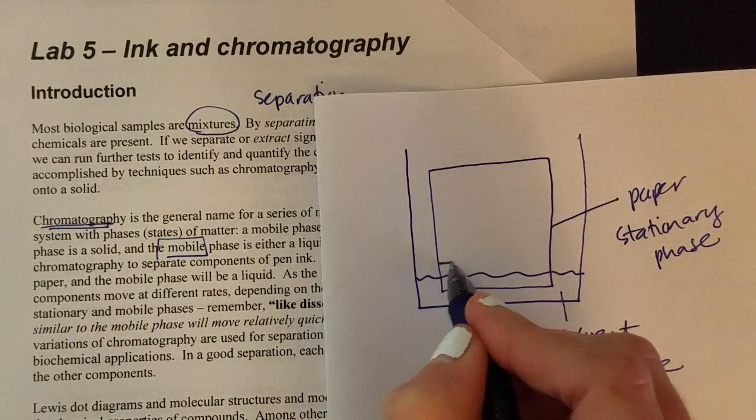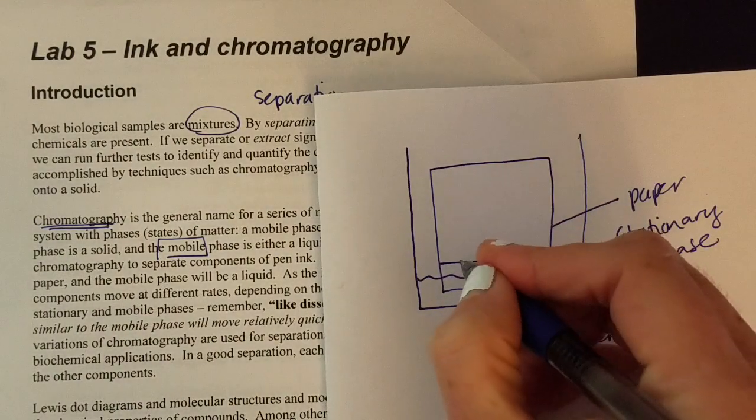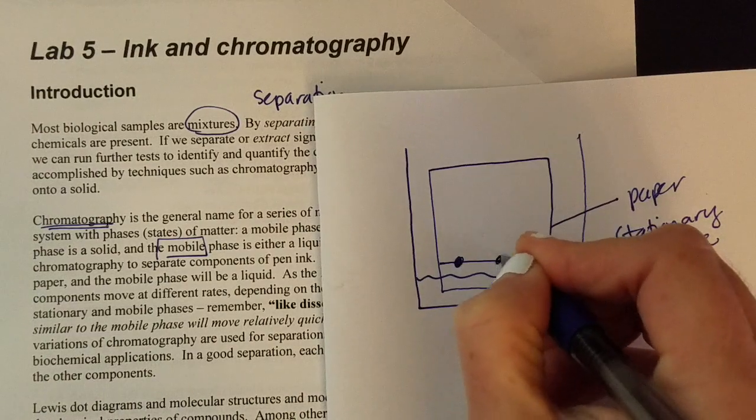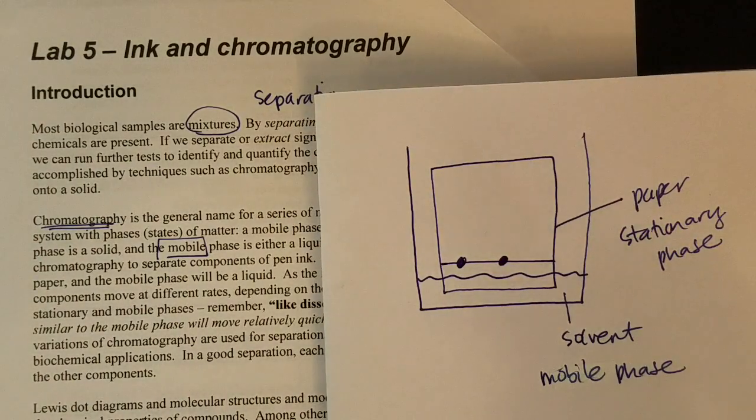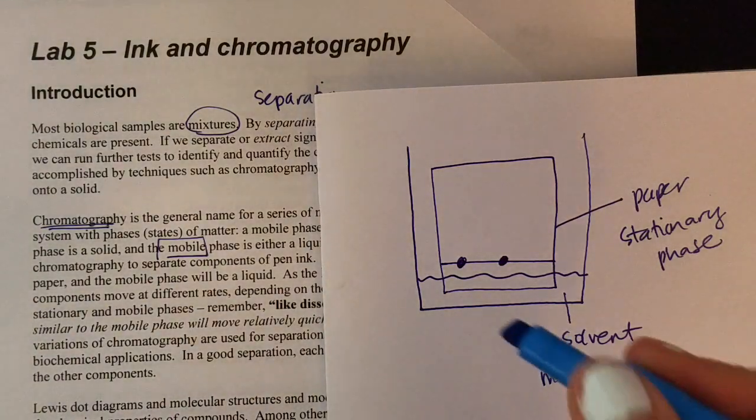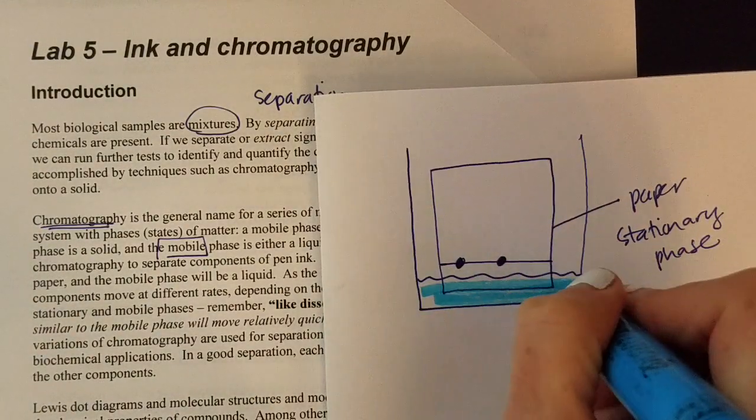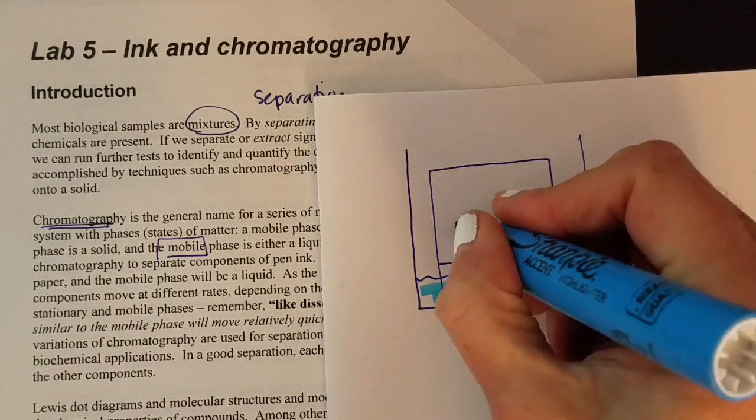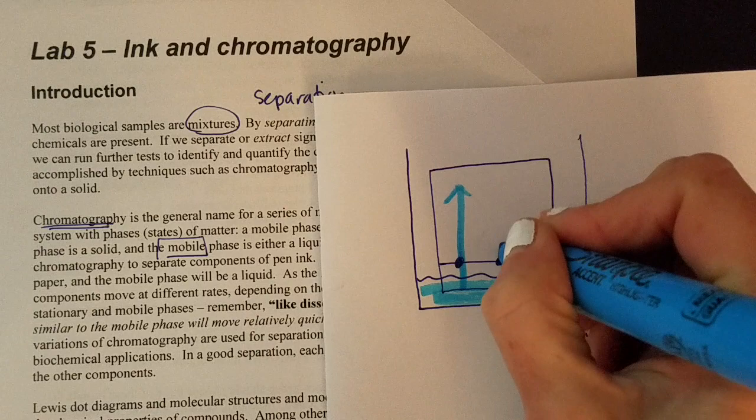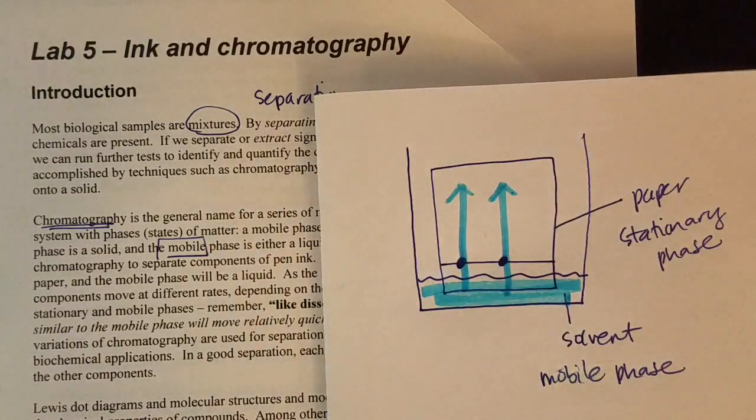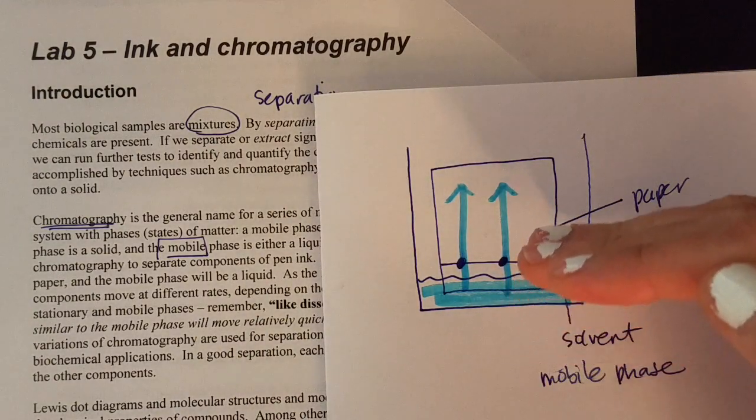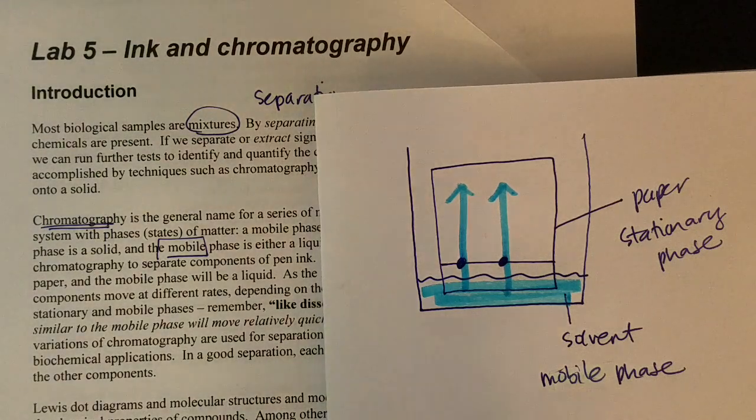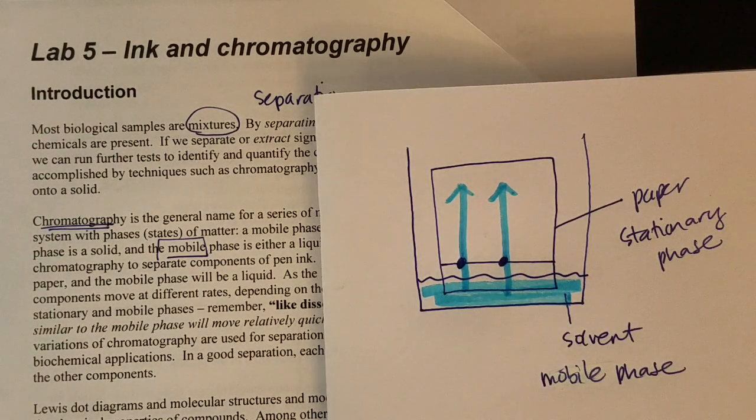So on that paper then we're going to put the substances that we want to separate. We're going to put a couple of spots of ink and over time, just like a paper towel or a napkin would at home, that solvent is going to get soaked up the paper. And so we will watch that paper progressively get wet. As that solvent moves up, it's going to start to separate out these inks.